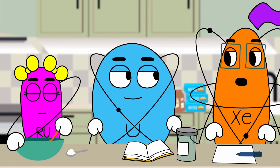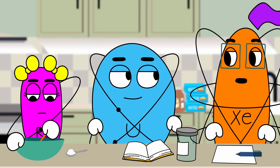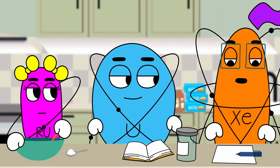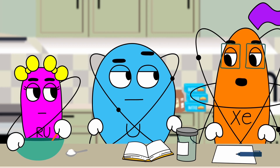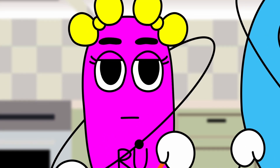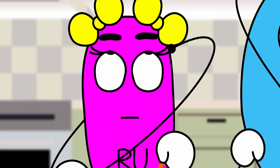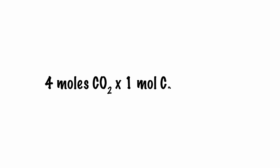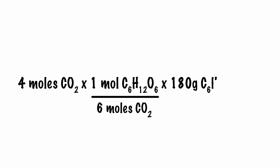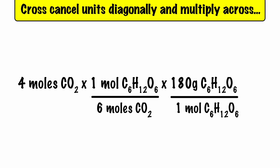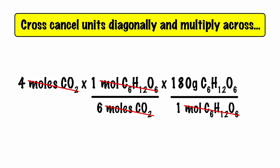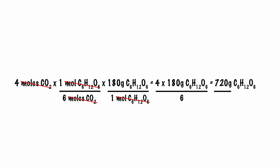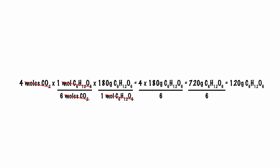As long as your parents have paid the water bill, we'll have plenty of water as our excess reactant, but only 4 moles of our limiting reactant CO2, because we need a ratio of 6 moles of CO2 for every 1 mole of glucose sugar. So this means we can only create 4/6 of a mole of sugar. Glucose is about 180 grams per mole. Stoichiometrically, that means 4 moles of CO2 times 1 mole of C6H12O6 per 6 moles of CO2 times 180 grams of C6H12O6 per 1 mole of C6H12O6. We cross-cancel units diagonally, then multiply across: 4 times 180 equals 720, divided by 6 equals 120 grams of C6H12O6 glucose sugar.